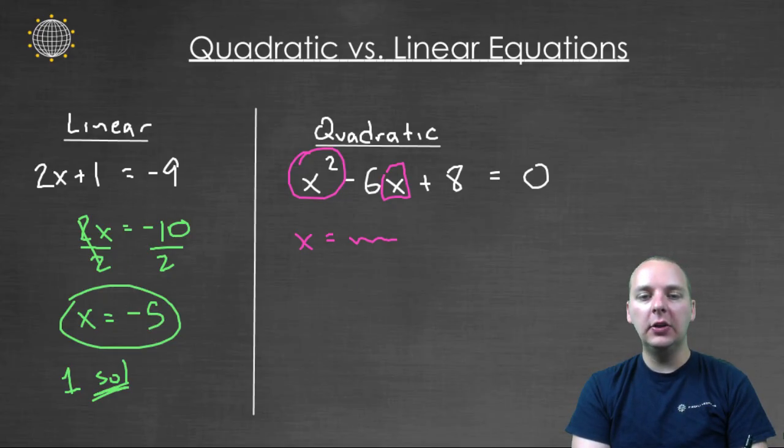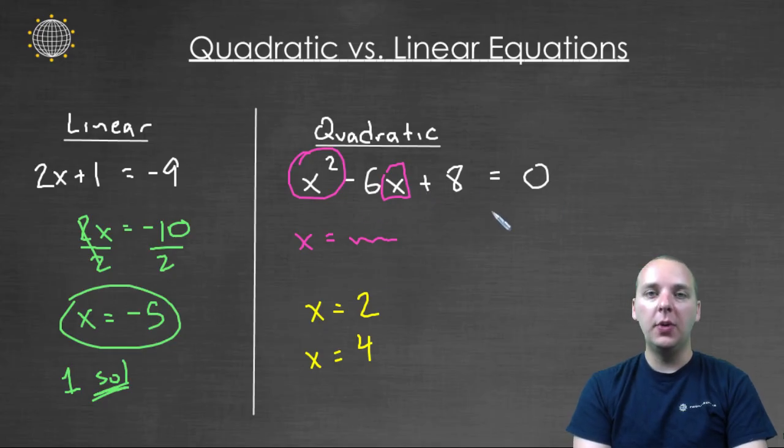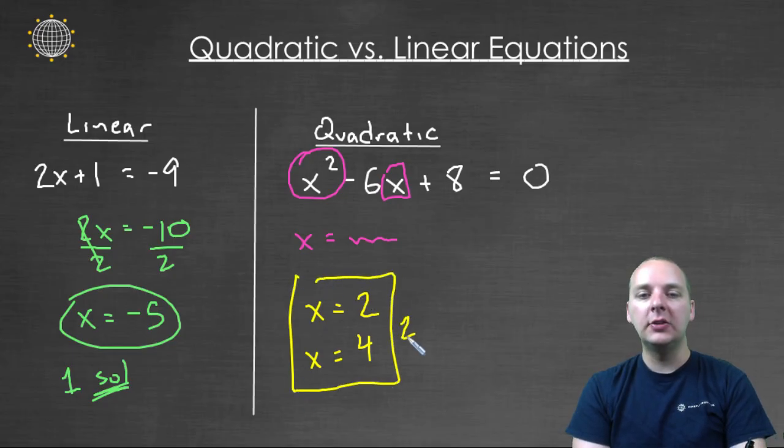And not only that, let's actually look at what some of these answers would be, and I'm not going to go through how I got these answers, but the answers for this one would be two and four. Meaning if you plug in a two, it'll make the left side equal zero, and make the equation true. And if you plug in four, it'll also make the equation true. So this guy in fact has two solutions, which is kind of interesting.